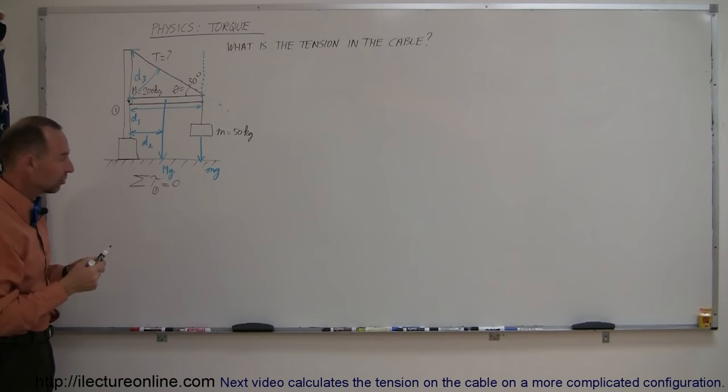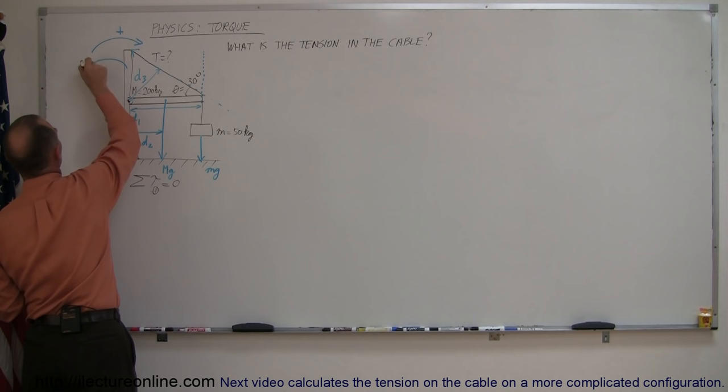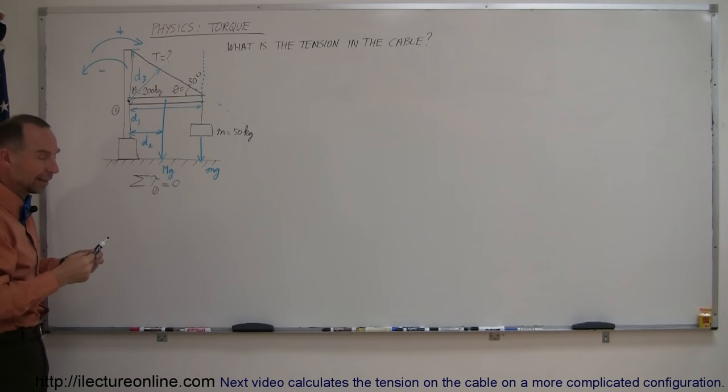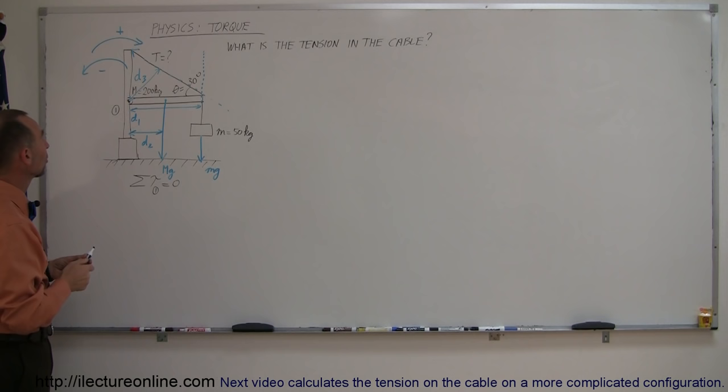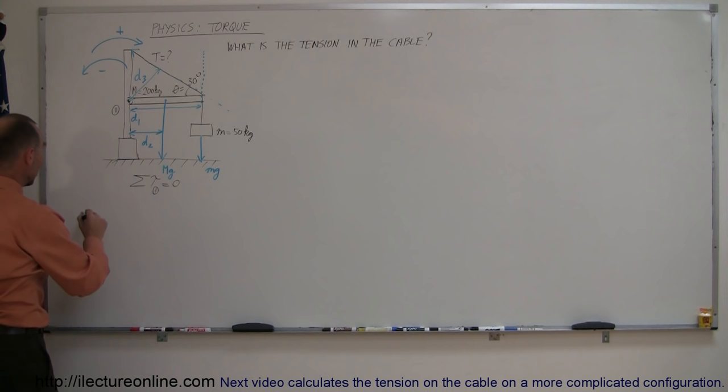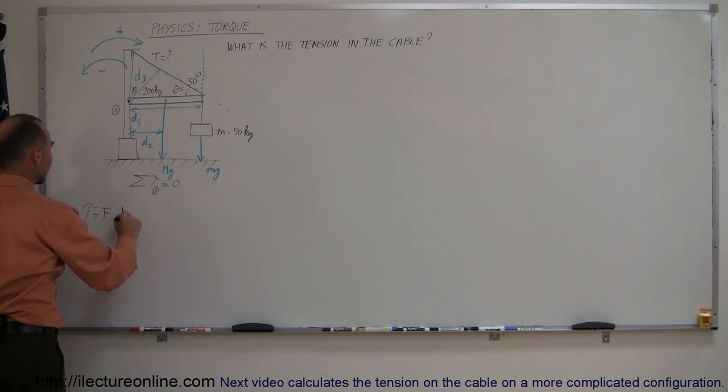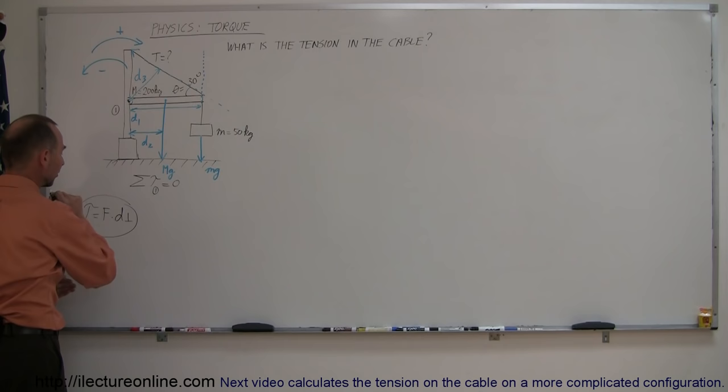These two forces — big Mg and small mg — would cause the beam to rotate clockwise, while the tension in the cable would cause the beam to rotate counterclockwise. By definition, I'm going to call clockwise a positive torque and counterclockwise a negative torque. That's completely arbitrary — some textbooks do it the other way — but it makes no difference as long as you're consistent within the problem. A torque is equal to the force acting on an object times the perpendicular distance from the line of action of the force to the pivot point.